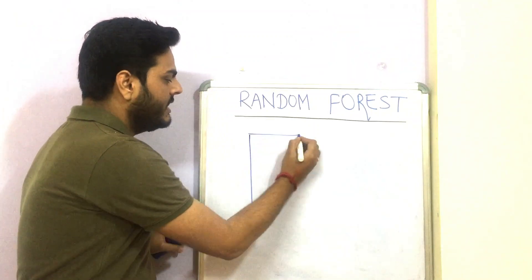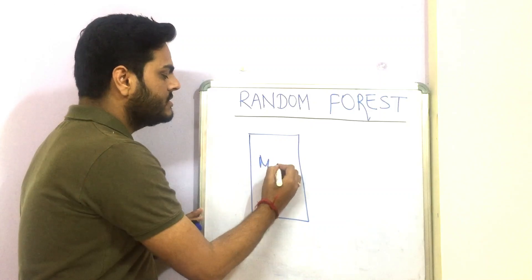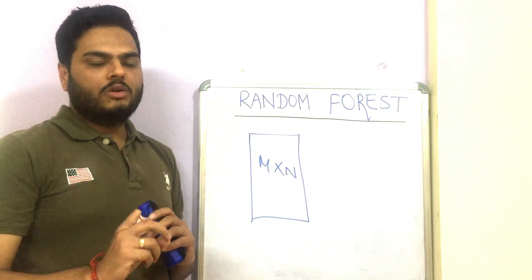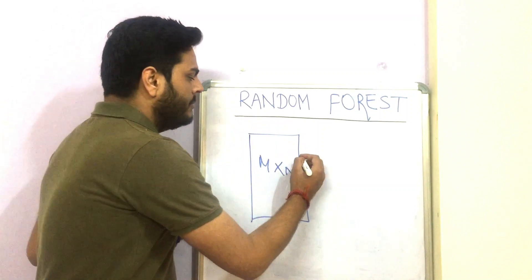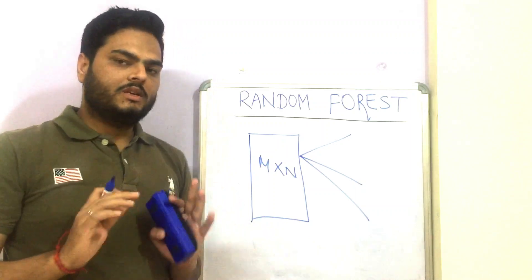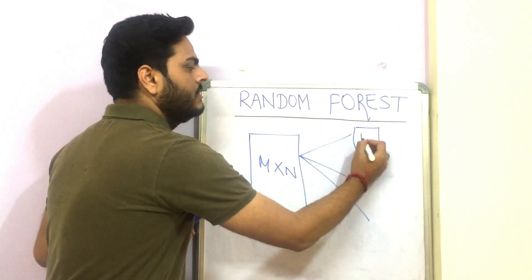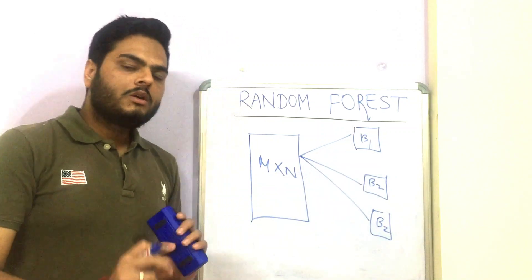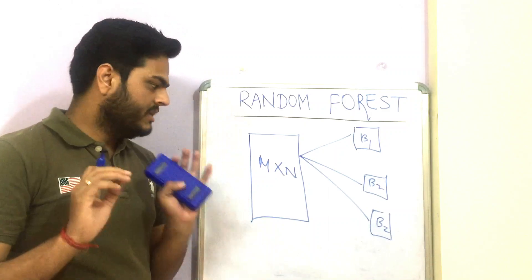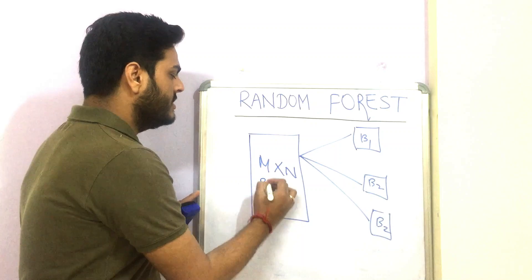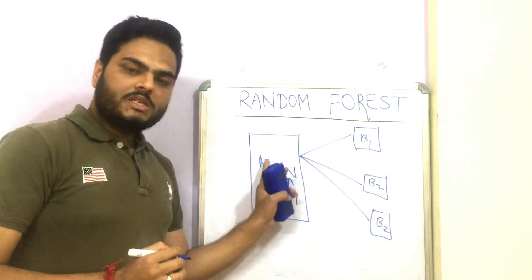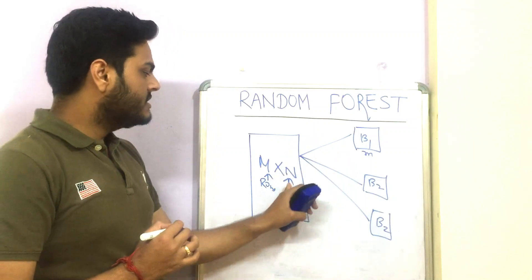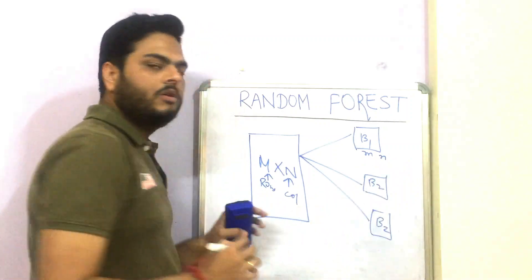If this is the main data with M rows and N columns, then using bootstrap aggregation (bagging), multiple bags of data will be created. For simplicity, say three bags: bag one, bag two, and bag three. For all these bags, there will be both row sampling and column sampling. From the M rows, a smaller m rows are randomly selected into each bag, and from the N columns, a smaller n columns are randomly selected.